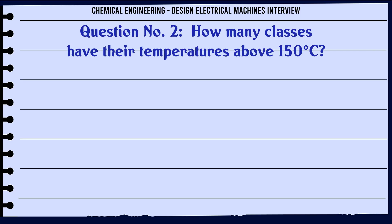How many classes have their temperatures above 150°C? A: 2, B: 3, C: 4, D: 5. The correct answer is 3.